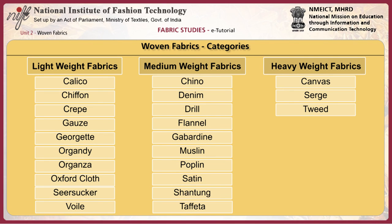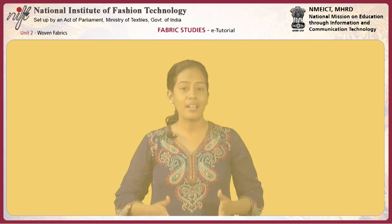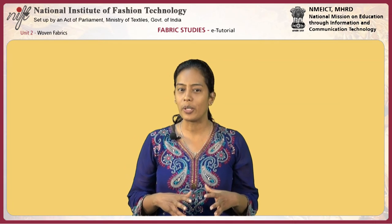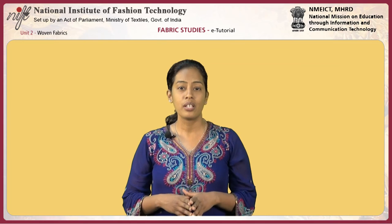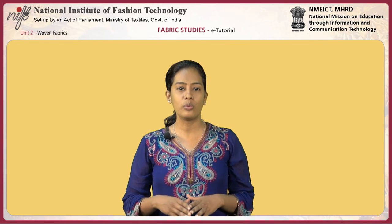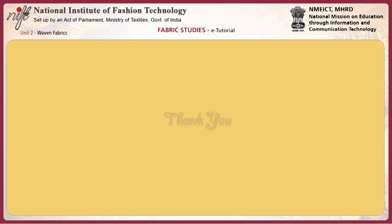As we have seen, woven fabrics are categorized as light weight, medium weight and heavy weight fabrics according to their thickness and heaviness. Woven fabrics are the most widely used variety of fabrics in day-to-day life for clothing, home furnishing and industrial products. To summarize, in this unit you have learnt about the basic fabric weaves including plain weave, twill weave and satin weave, as well as typical woven fabrics including different kinds of light weight, medium weight and heavy weight fabrics. Thank you.